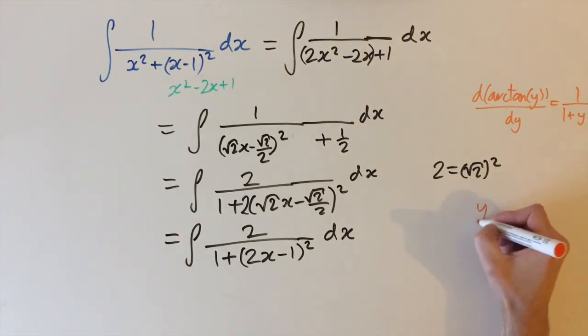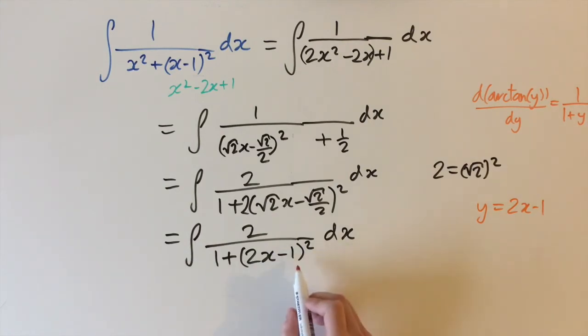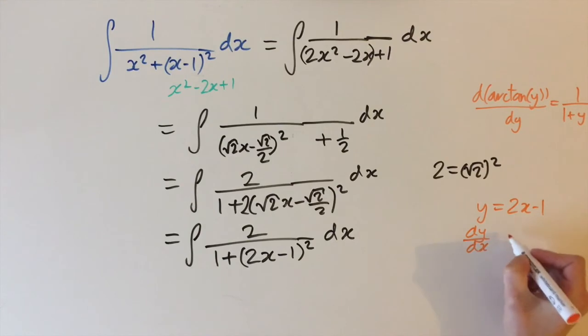To make the connection, let's write y as 2x minus 1. Very conveniently, we have the derivative of y, so dy dx equals 2, and we have this on the numerator. If you think about the reverse chain rule, if we were to differentiate the arctan of y, we'd get this on the bottom, but we'd also have to multiply by the derivative of y, which is 2. So this, very conveniently,